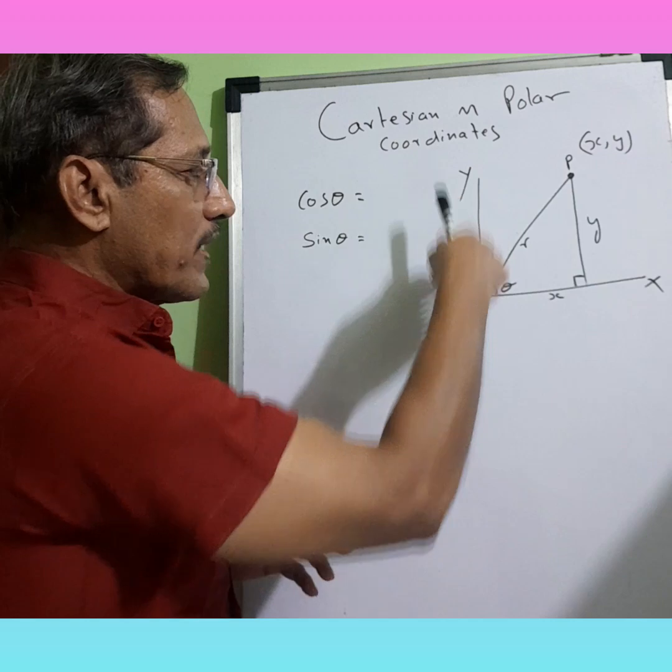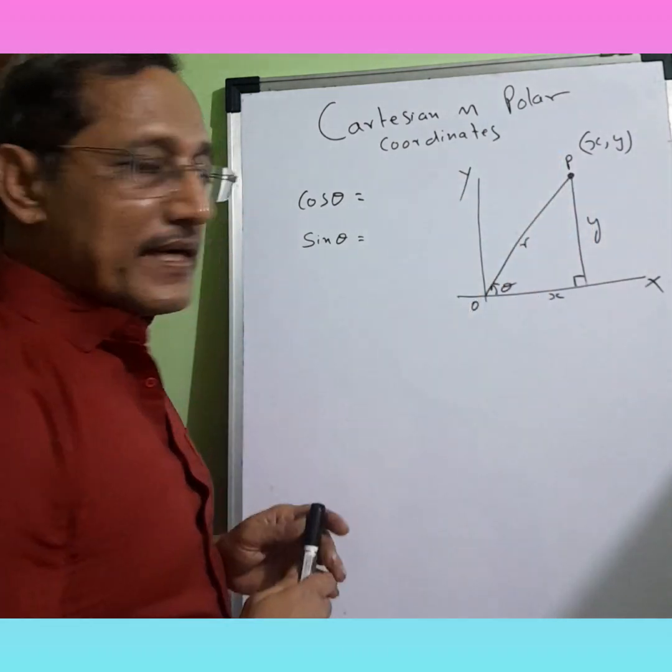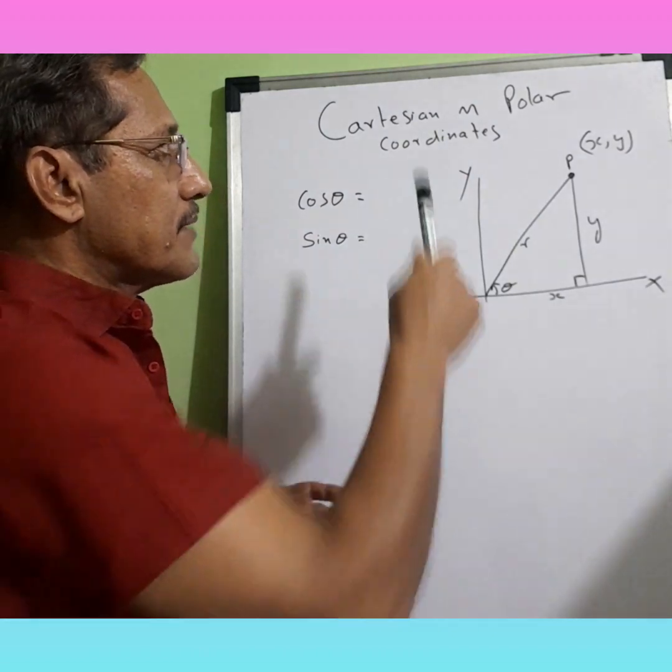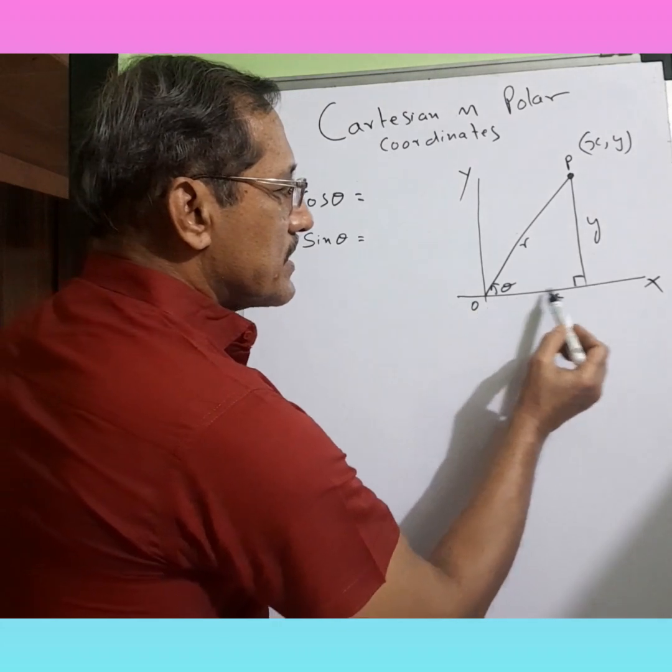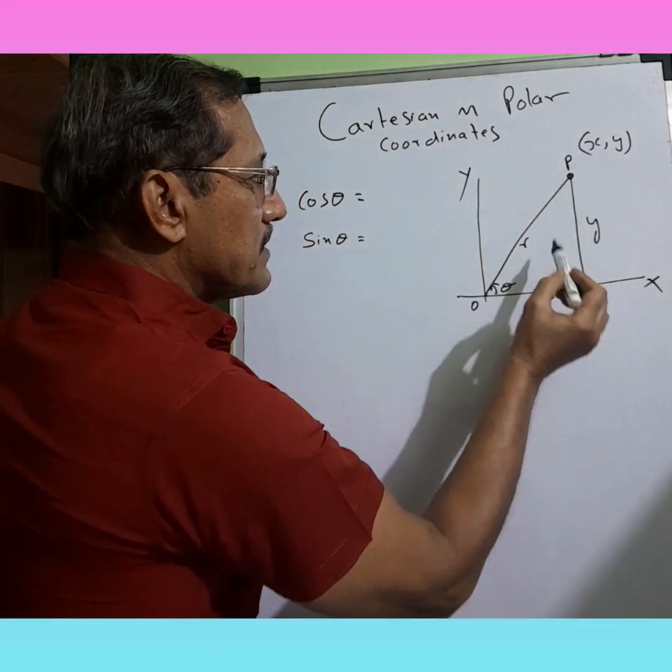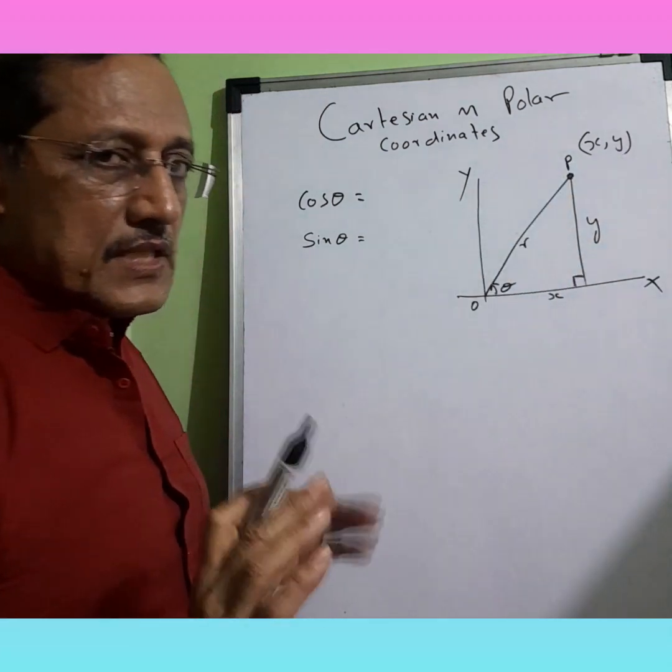Basically this is the X and Y axis, this being the origin. Suppose this is a point on a plane. If we want to represent it by Cartesian coordinates, then obviously this distance is X, and this distance is Y. Done.